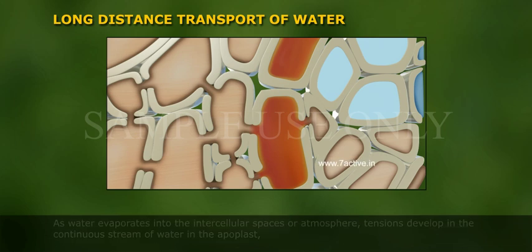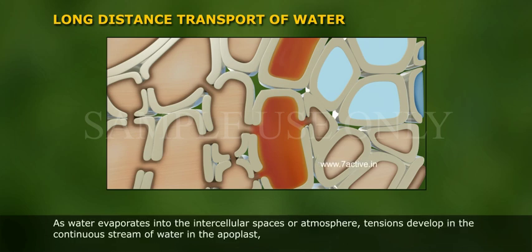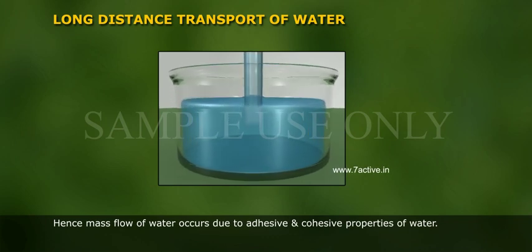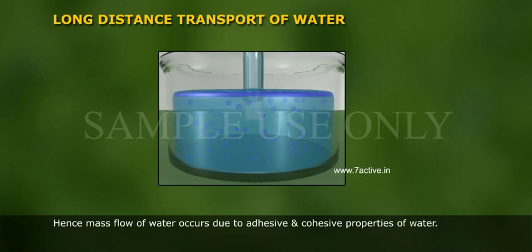As water evaporates into the intercellular spaces or atmosphere, tensions develop in the continuous stream of water in the apoplast. Hence, mass flow of water occurs due to the adhesive and cohesive properties of water.